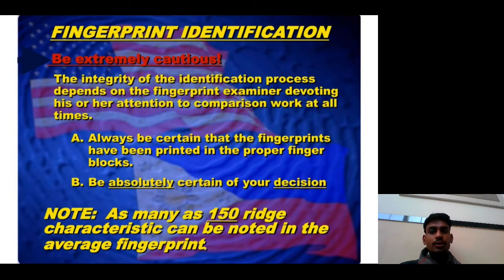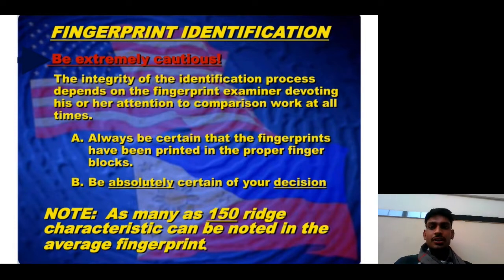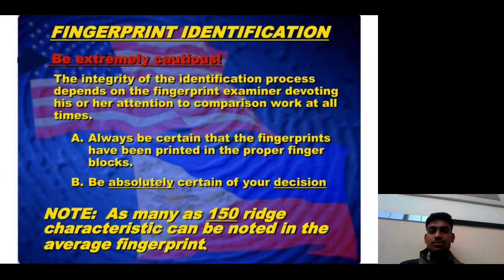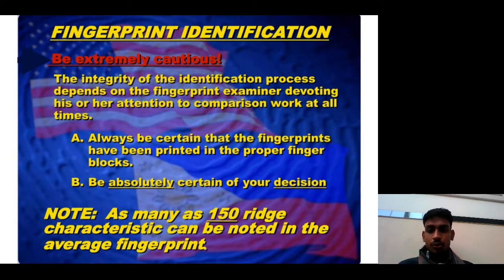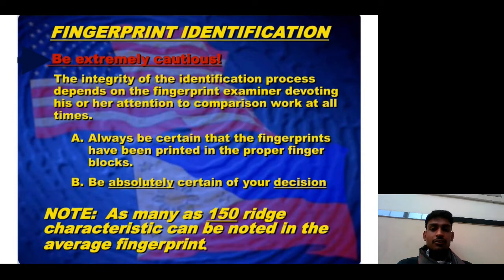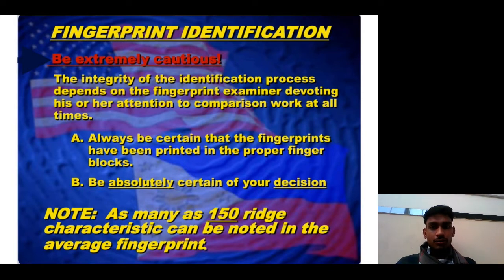Certain precautions must be taken during identification as a forensic examiner. Always ensure that the fingerprints have been printed in the proper finger blocks so that the ridges can be seen clearly. Be absolutely certain of your decision, and record fingerprints very carefully so that different characteristics can be seen clearly in the fingerprint photo.